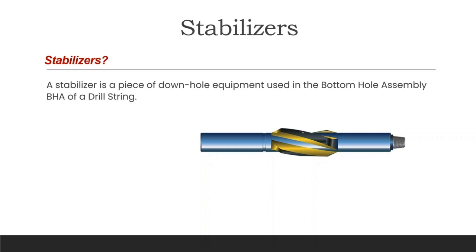What are stabilizers? A stabilizer is a piece of downhole equipment used in the bottom hole assembly of the drill string. It mechanically stabilizes the bottom hole assembly in the borehole in order to avoid unintentional sidetracking, vibrations, and ensure the quality of the hole being drilled. The stabilizer is composed of a hollow cylindrical body and stabilizing blades, both made of high-strength steel.